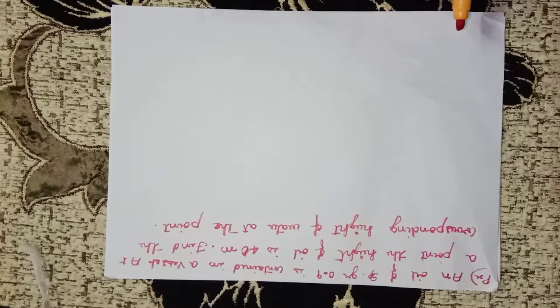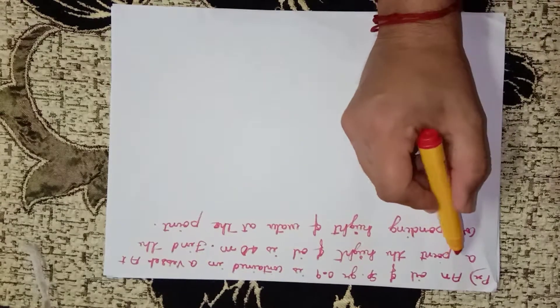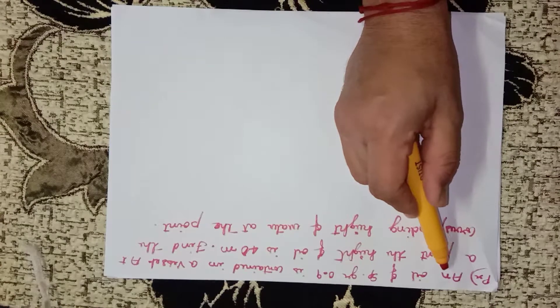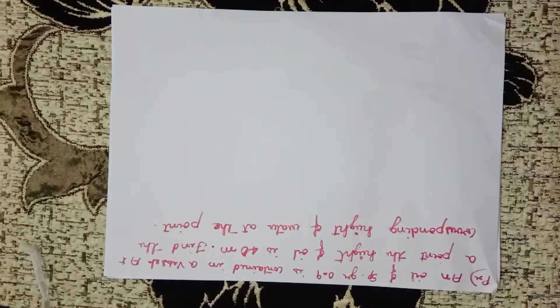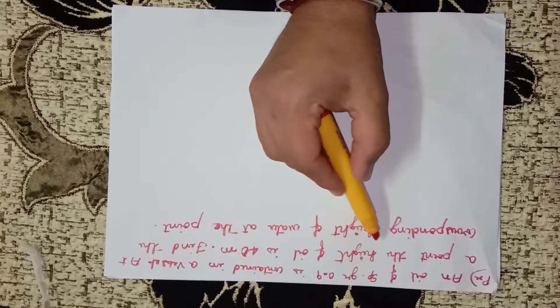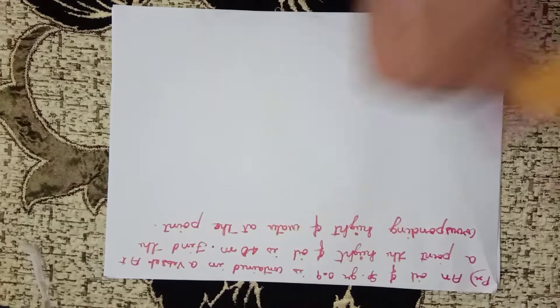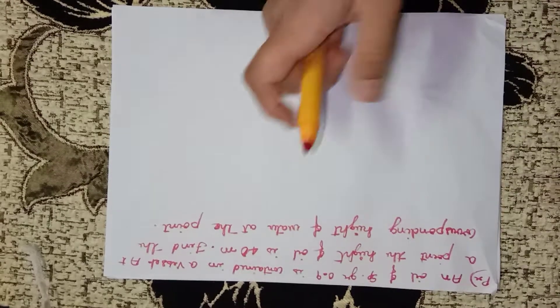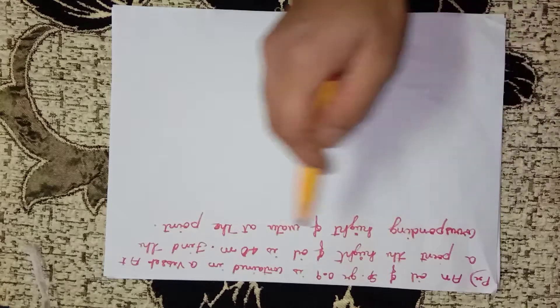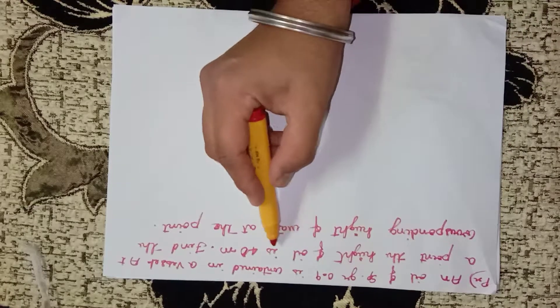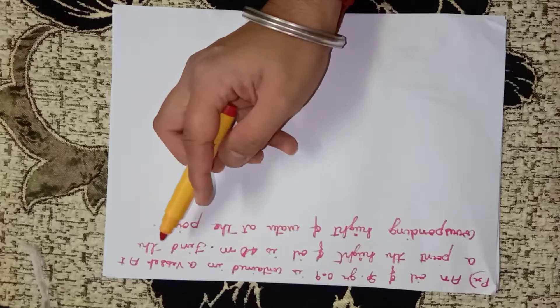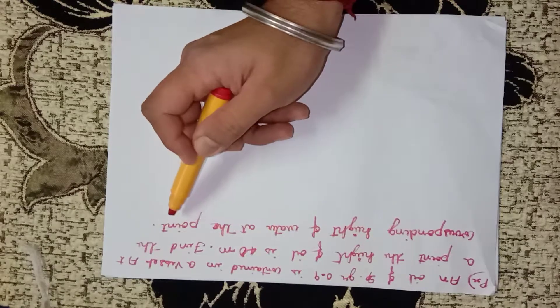Hello friends, welcome to my channel. Now we will take another problem. An oil of specific gravity 0.9 is contained in a vessel. At a point, the height of oil is 40 meters. Find the corresponding height of water at the point.